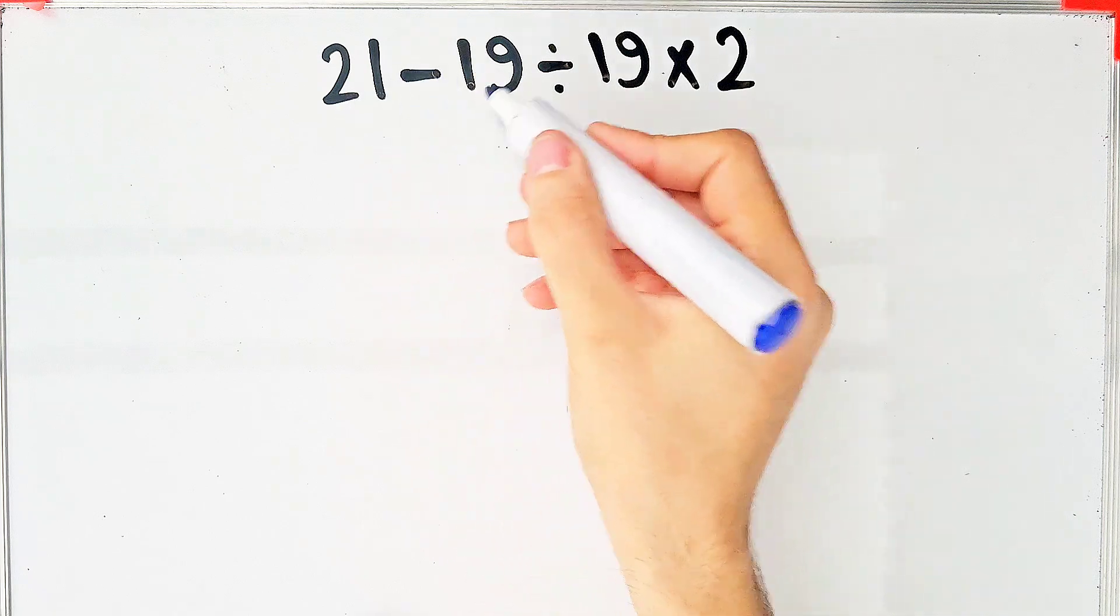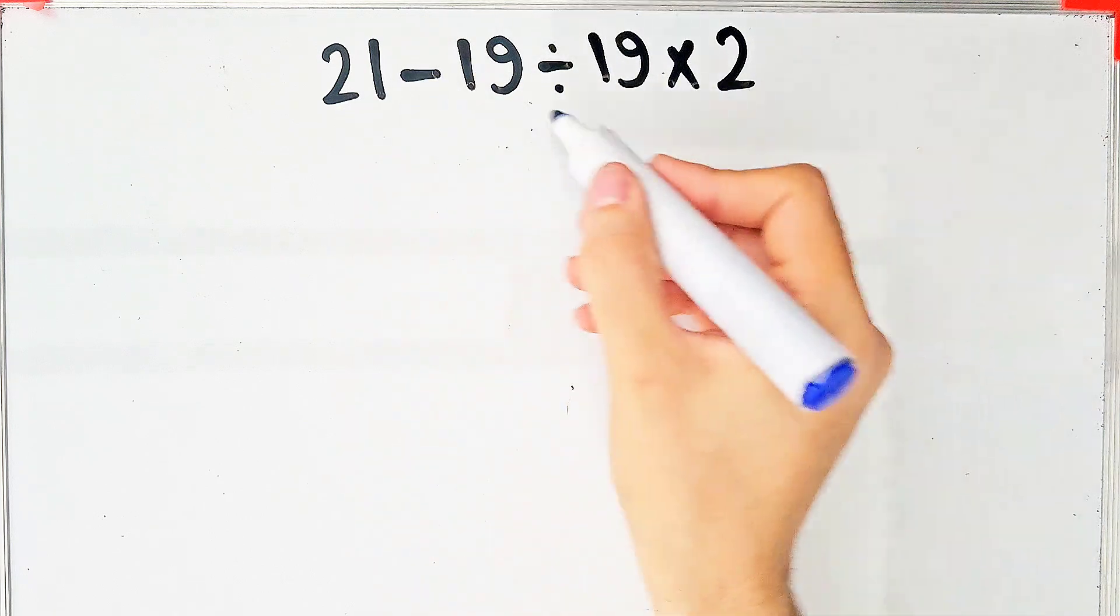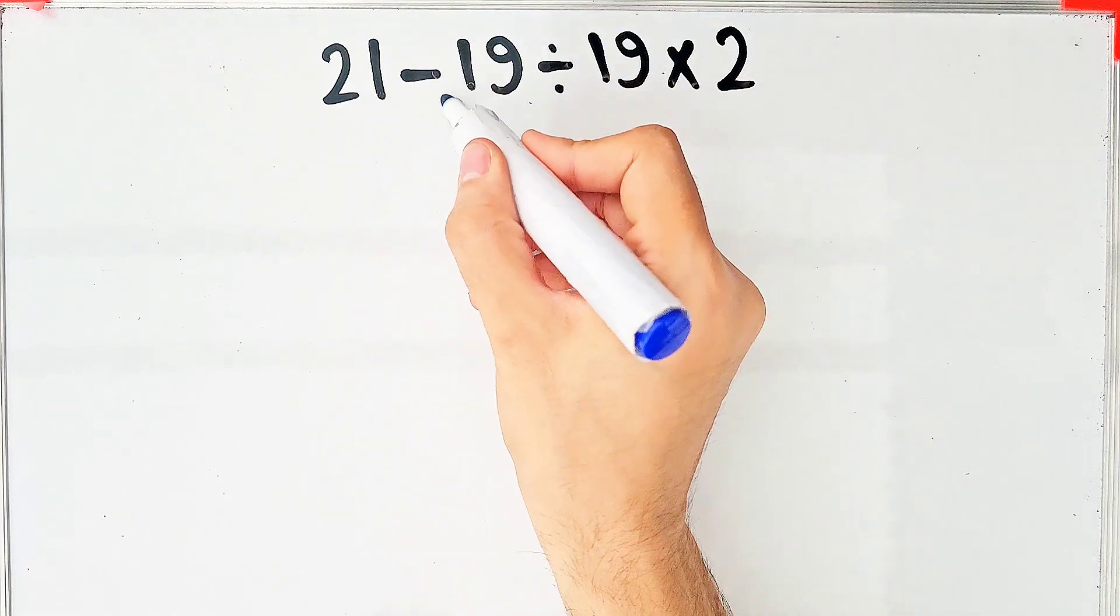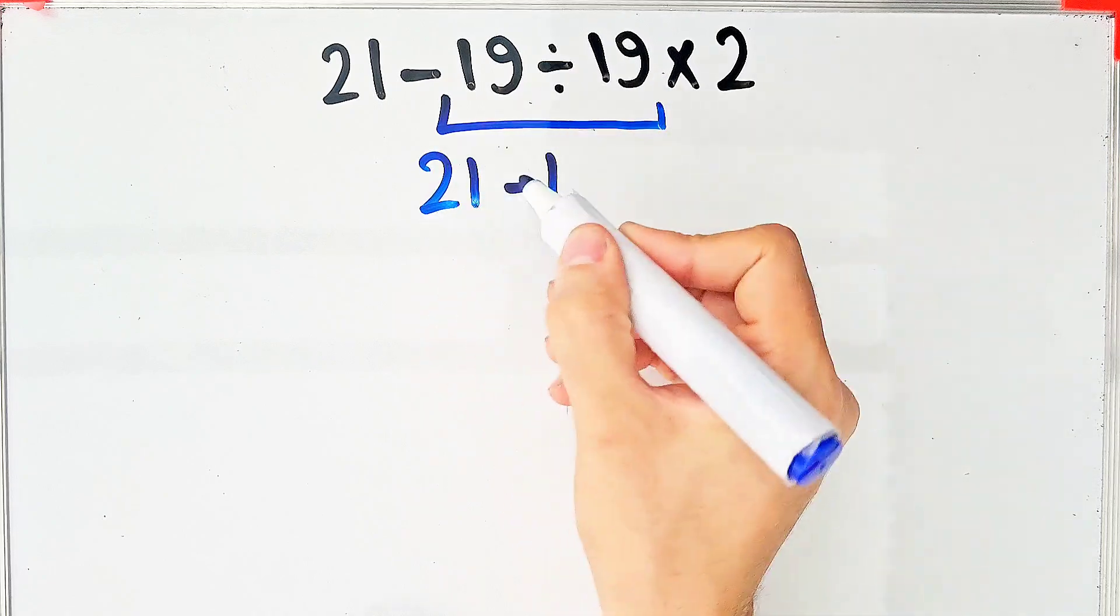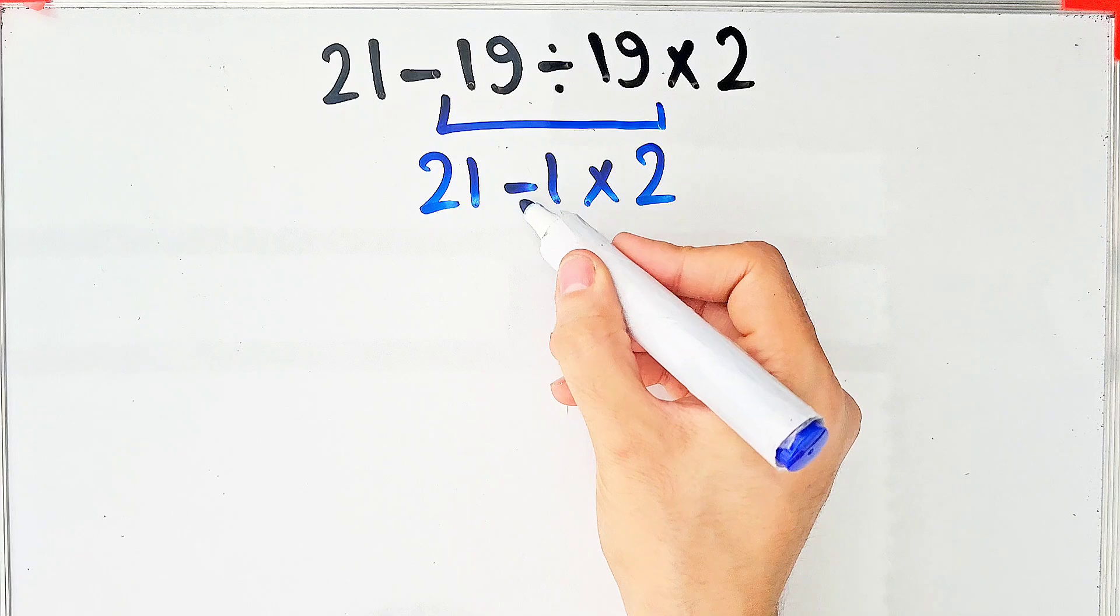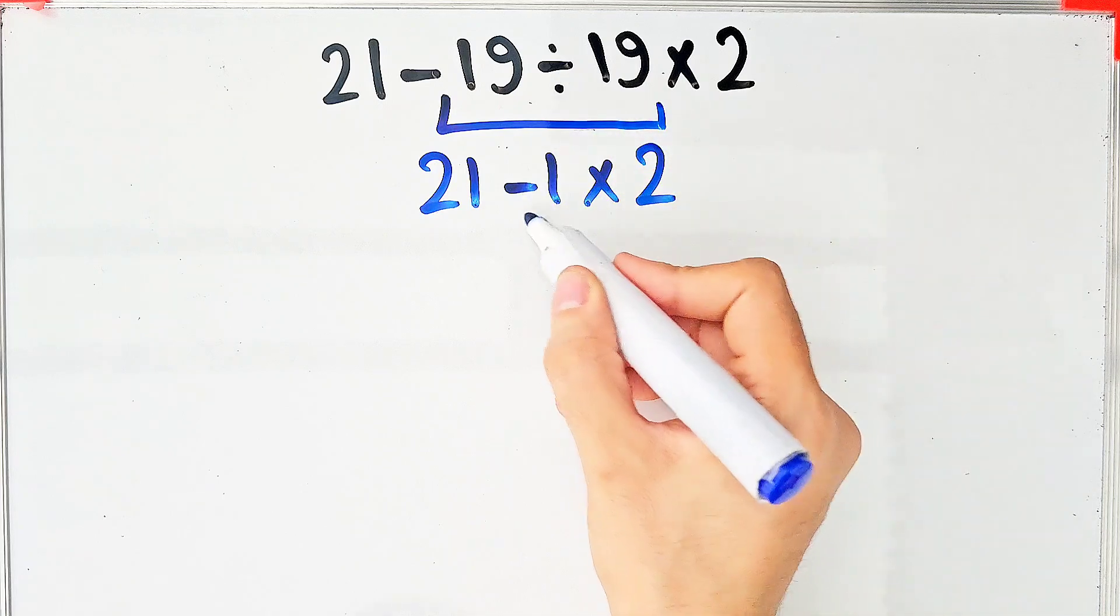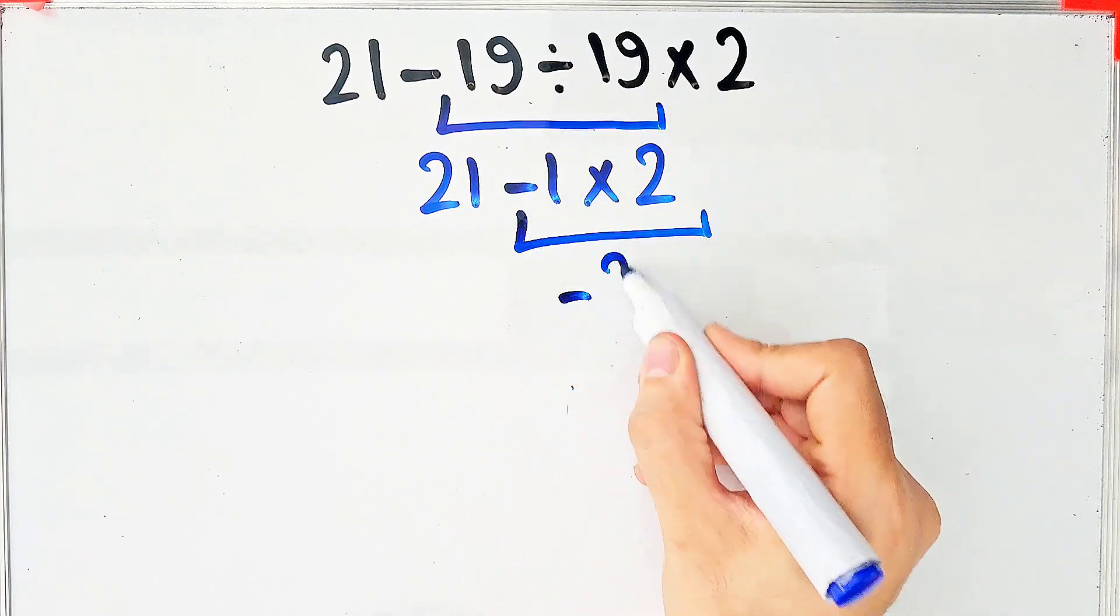21 minus 19 divided by 19 times 2. Again, we simplify this division. Negative 19 divided by 19 equals negative 1. 21 minus 1 times 2. Now we do this multiplication because multiplication has higher priority than subtraction. We have 21 minus 2 which equals 19.